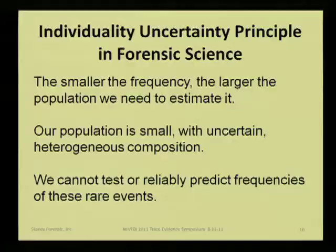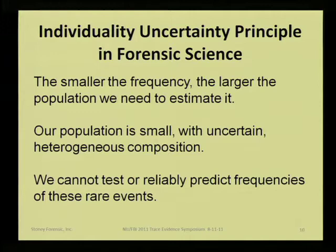Our focus is on extremely rare events, at least the way we traditionally approach forensic trace evidence. We want highly discriminating methods, but that gets us into a syndrome of trying to not only use highly discriminating methods on one particle type, but also predict how frequently it occurs. I decided to name this the individuality uncertainty principle in forensic science: the smaller the frequency, the larger the population we need to estimate it. Our population is small with uncertain, heterogeneous composition, and we can't test or reliably predict frequencies of those rare events.